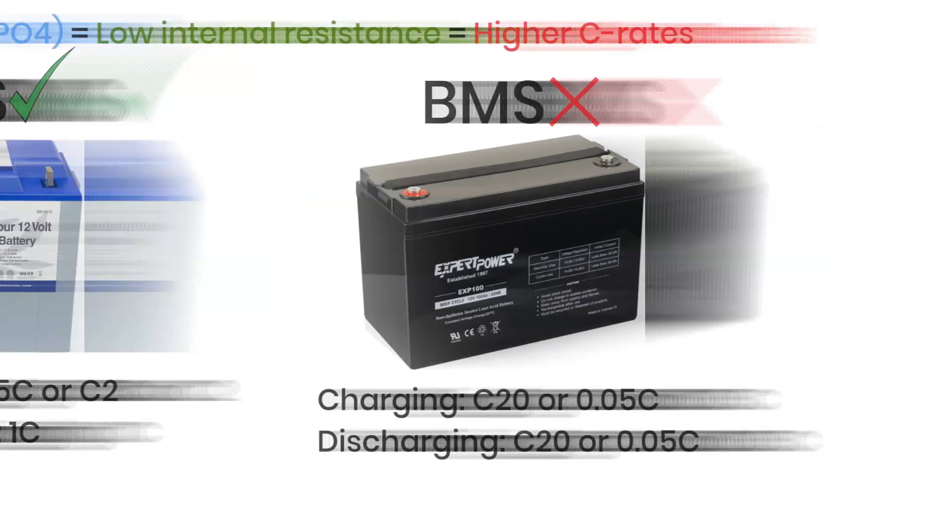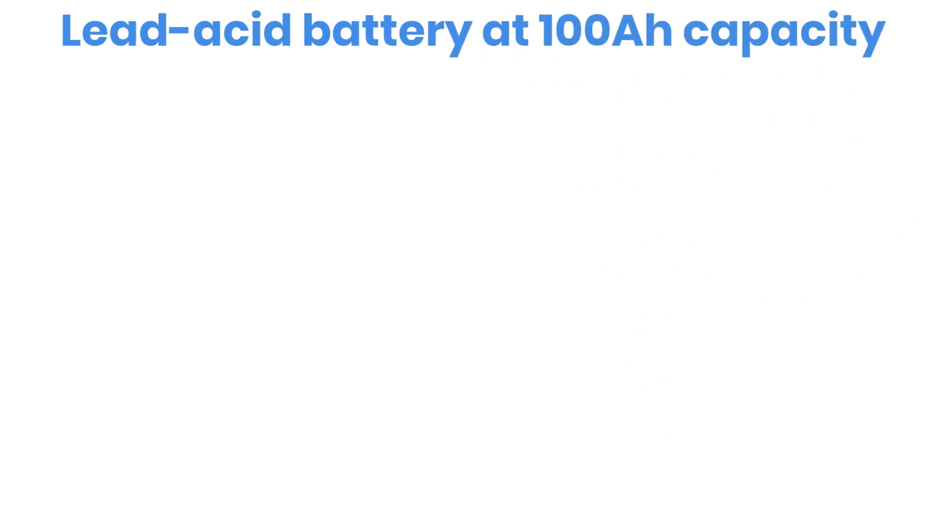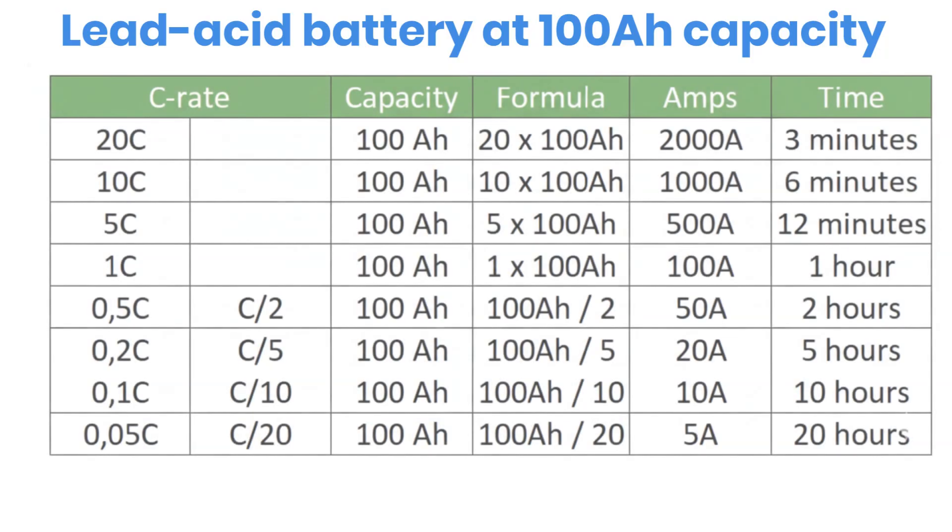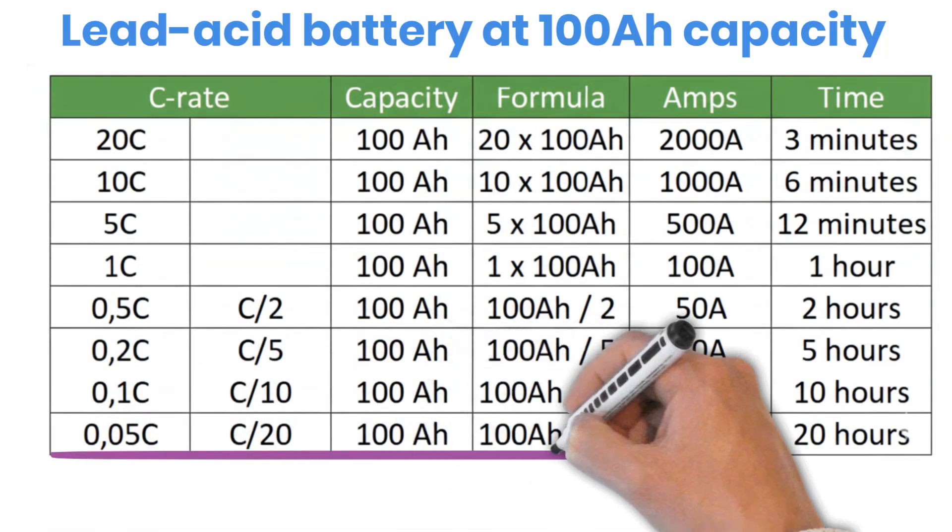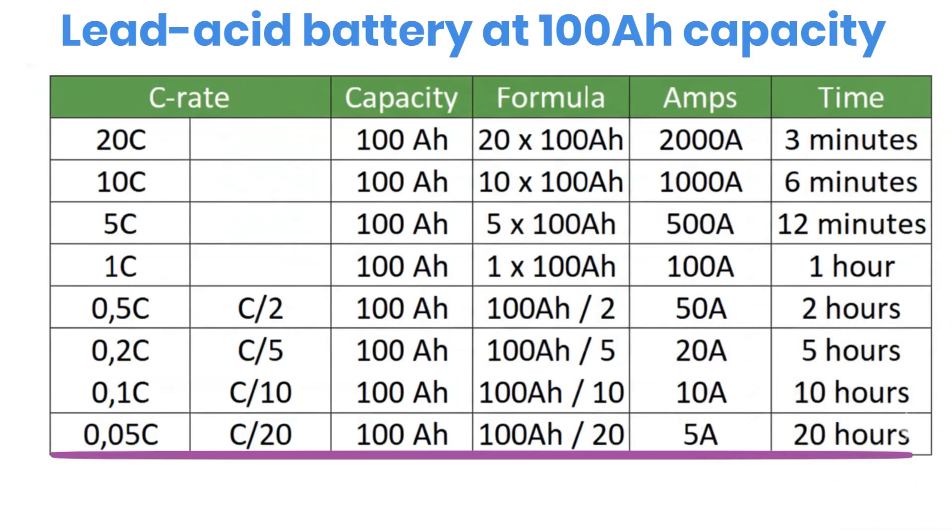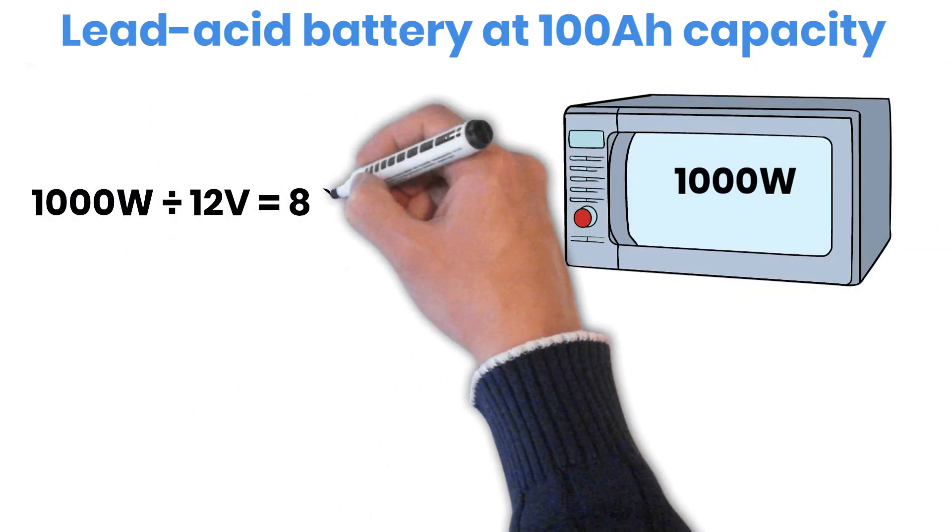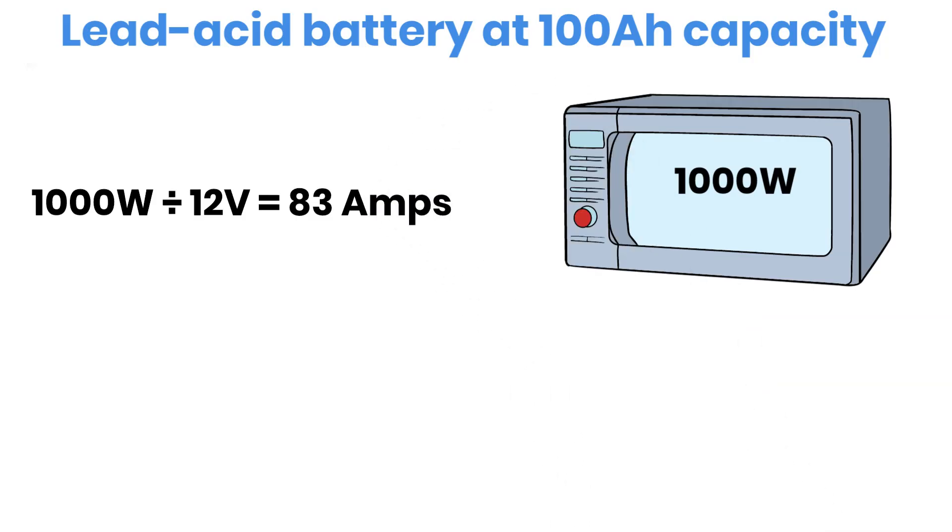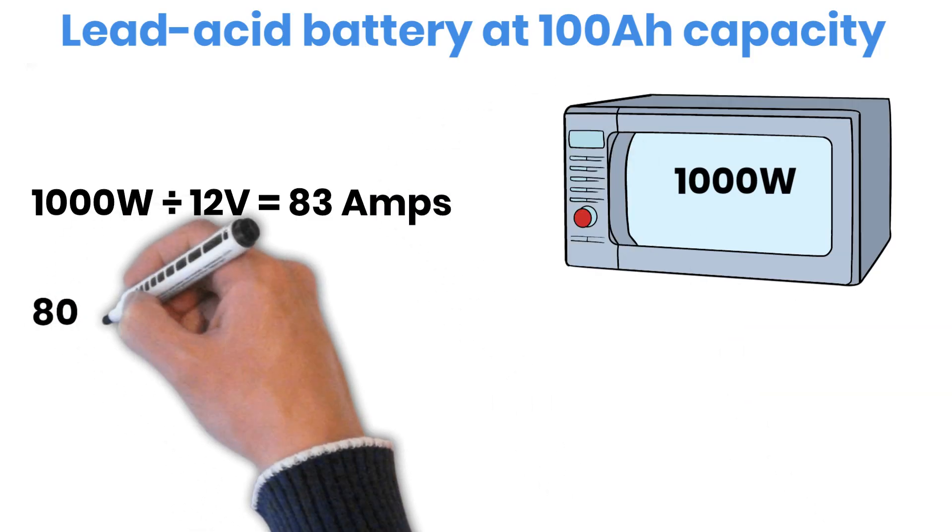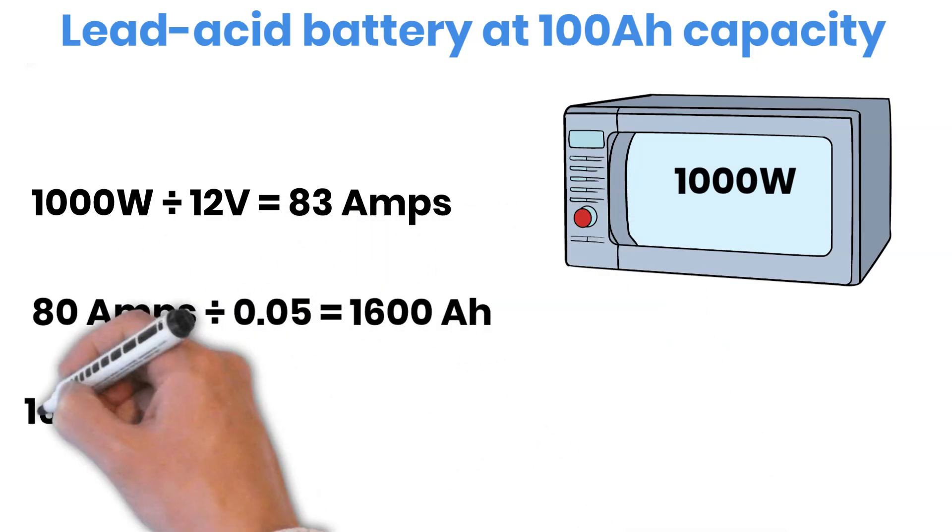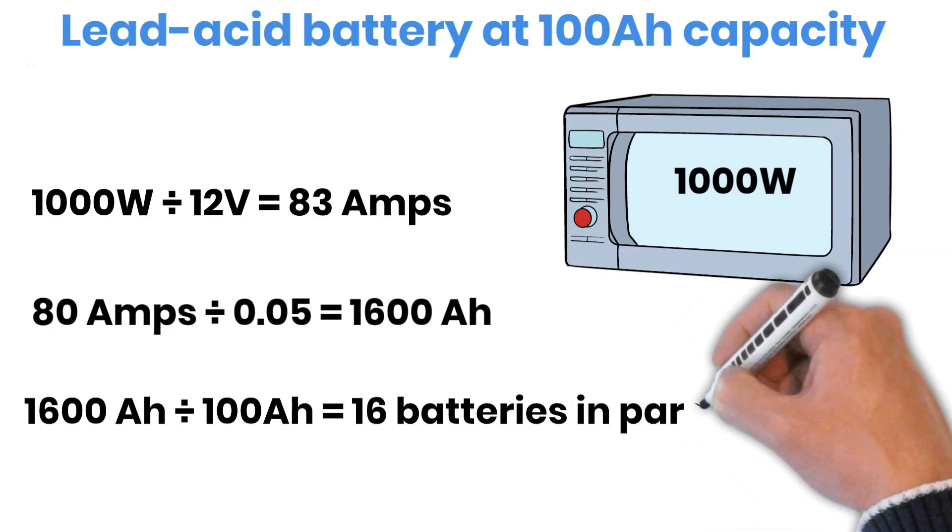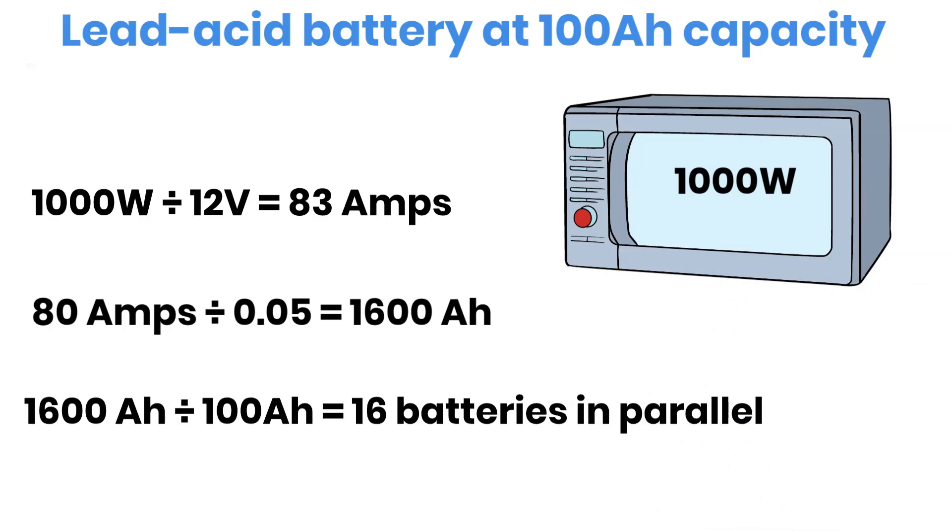Let's take a real-world load example. If you have a 100 ampere-hour lead-acid battery, and you look at the C20 or 0.05C rating, it tells you the battery is meant to supply 5 amps over a long period. But if you try to run a 1,000-watt appliance from a 12-volt inverter, the current draw jumps to around 83 amps. To safely deliver 83 amps while staying within the C-rate limit, you would need 16 batteries of 100 ampere-hours each. You can use fewer batteries, but then every battery will be forced to deliver more current than its rated C-rate, which reduces its usable capacity.